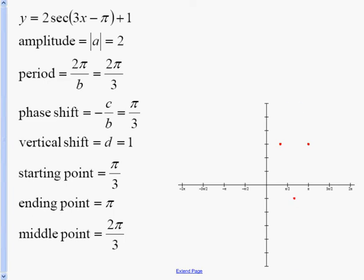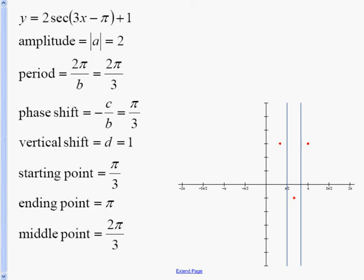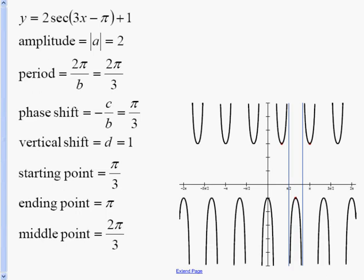Halfway between those, we have our asymptotes. And then we can take a look at our graph. Remember, our graph is shifted up 1.